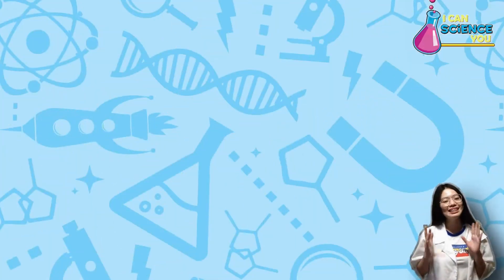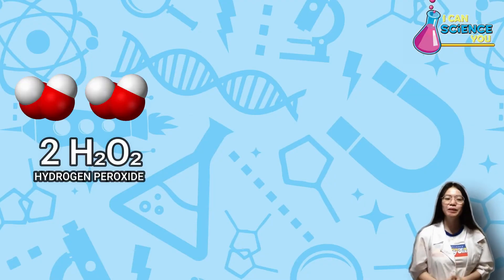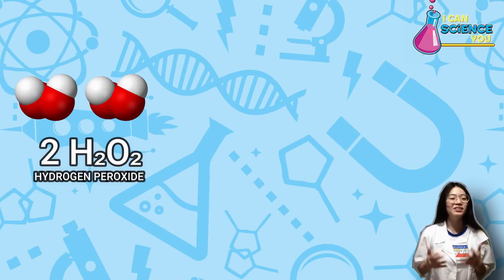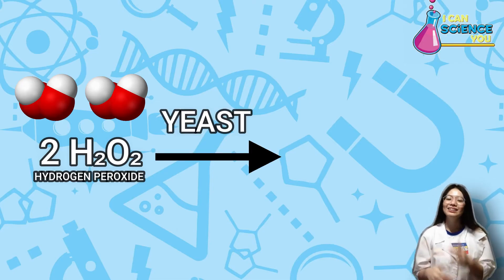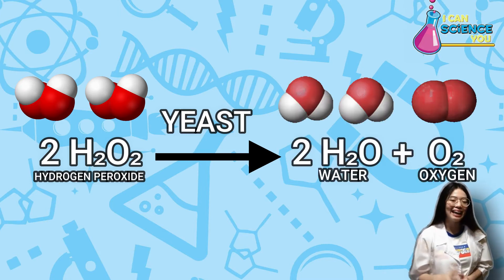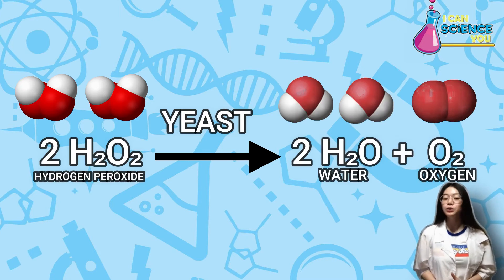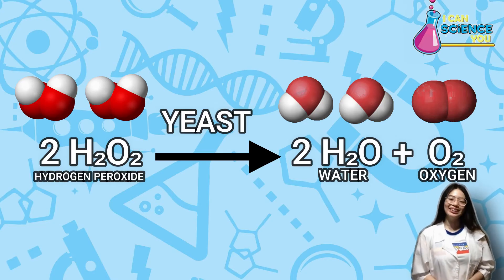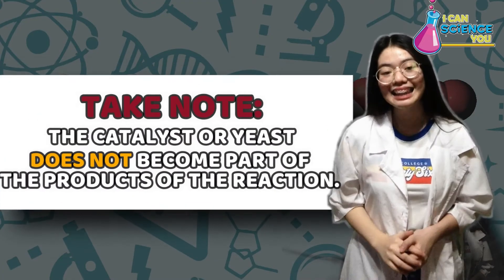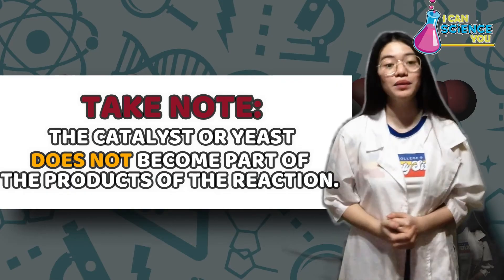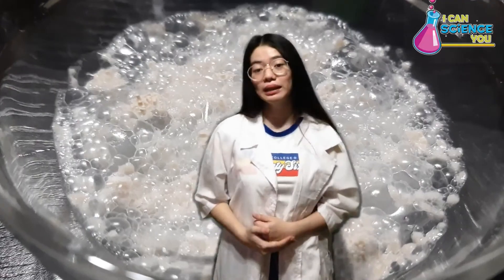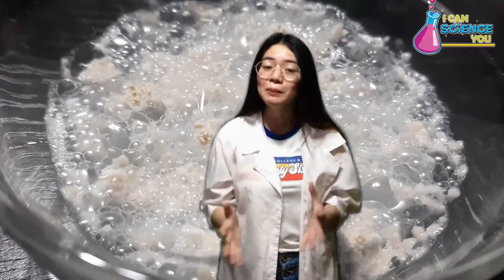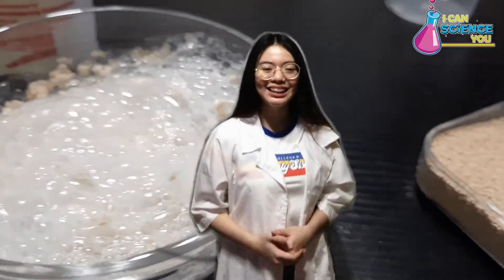Furthermore, we have this chemical equation. Hydrogen peroxide, or H2O2, as our reactant, and when we add our catalyst which is the yeast, it will increase the rate of the breakdown or decomposition of hydrogen peroxide. And by that, it produces water H2O and oxygen O2. Take note that the catalyst or yeast does not become part of the products of the reaction. On the other hand, the bowl should feel a little warmer because the decomposition of the hydrogen peroxide releases energy.